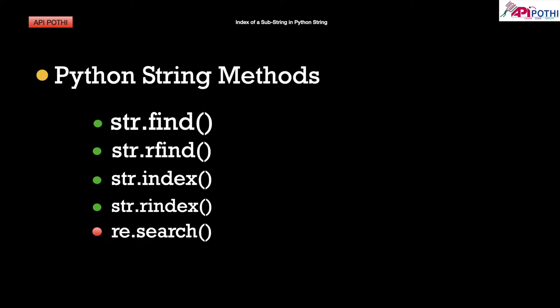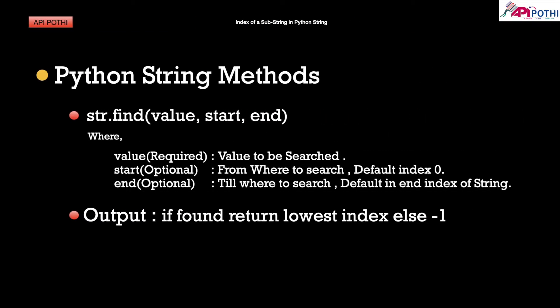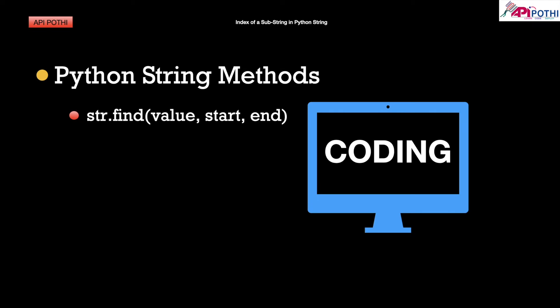Out of the four methods, the first method we are going to understand is the find method. The find method technically has three arguments, out of which two are optional. The first required argument is the substring we need to find the matching indexes for. The other two optional arguments are start and end. The find method gives two possible outputs: if the string is found, it returns the lowest index where the substring is matched; if not found, it returns minus one.